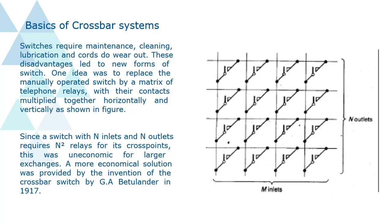Switches require maintenance, cleaning, lubrication and cords do wear out. These disadvantages led to new forms of switch. One idea was to replace the manually operated switch by a matrix of telephone relays, with their contacts multiplied together horizontally and vertically as shown in figure.